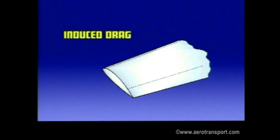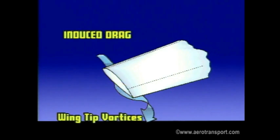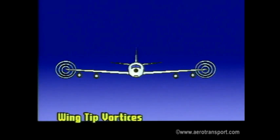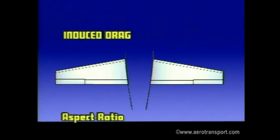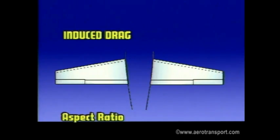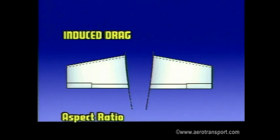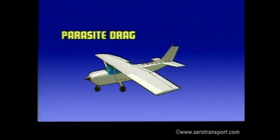Induced drag is a result of lift. High pressure air from under the wing flows to the lower pressure area above the wing, creating a rotary motion at the wing tips. This airflow is known as wing tip vortices. This disturbed air causes induced drag. Induced drag is also influenced by the aspect ratio. This is the ratio of the wingspan to the mean chord. The higher the aspect ratio, the lower the induced drag.